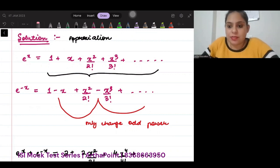Tell me something. If I can open e to the power x like this, then how will you open up e to the power minus x? Well, in this case, your even places will remain unchanged, but in your odd places, you will get a negative sign.